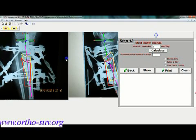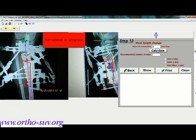At step number 13, we have to insert the rate of deformity correction. It can be traditional one millimeter per day, or it can be 0.75 millimeters, half a millimeter per day, or two millimeters. In this case, we will use one millimeter because it's traditional, and we click the calculate button. It takes into consideration the structure trees which we pointed in the previous step.